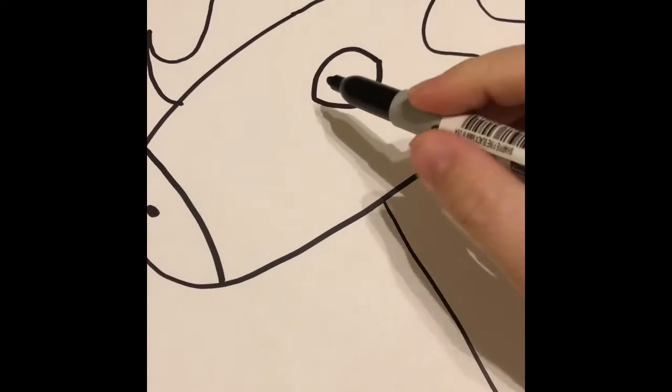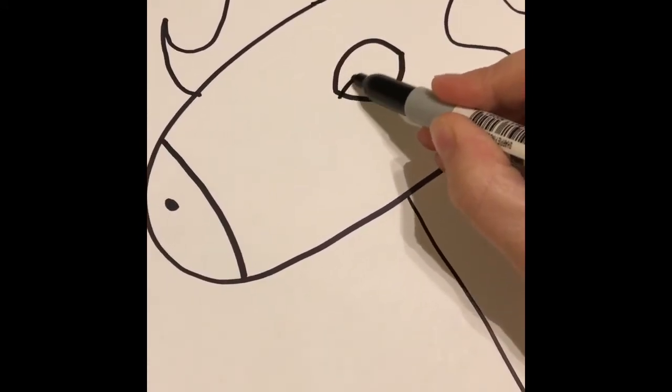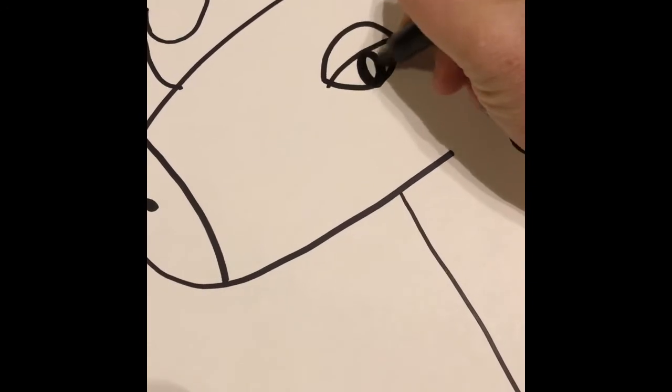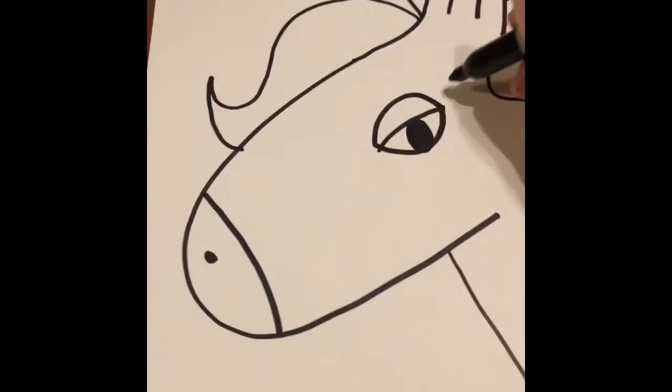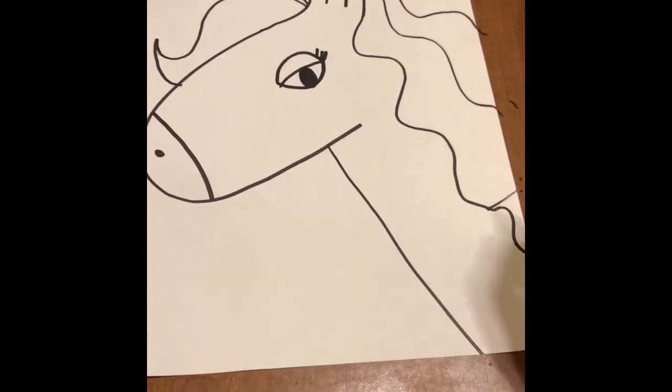Then I want to make an eyelid. So I'm gonna draw a straight line from this point to that point. There is my eyelid. And then I'm gonna color in an eyeball. So there is my unicorn's eyeball. If you want you can add some eyelashes to the back. So there's some little eyelashes on my unicorn.